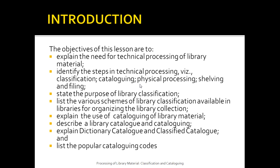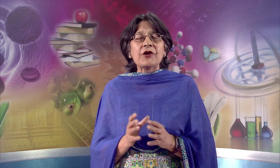Thirdly, state the purpose of library classification. Besides this, we will try to list the various schemes of library classification that are available in present libraries for organizing the library collection. We will also explain the use of cataloging of library material, describe what a library catalog and cataloging is all about, explain what a dictionary catalog and classified catalog is, and list some of the popular cataloging codes.